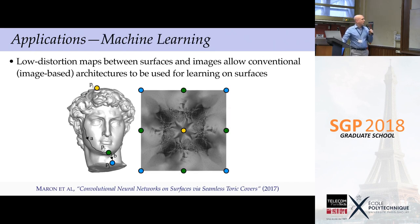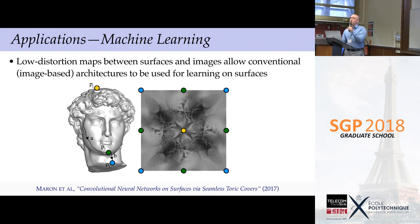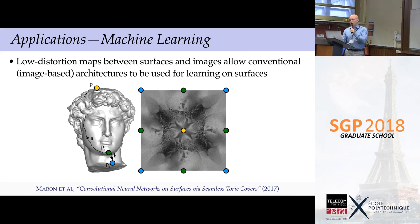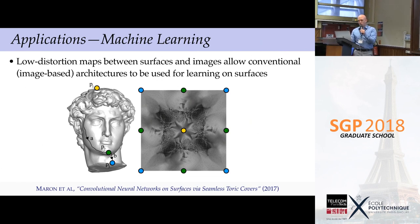Another area getting a lot of attention is deep learning and machine learning. When we think about applying these techniques to geometry rather than images, it's still a very big open question. A lot of people are asking what the right representation for geometry is when it comes to learning. One path is to map geometry to an image, and here conformal geometry has started to play a bigger and bigger role in coming up with effective mappings for that kind of problem.